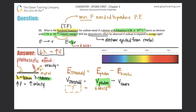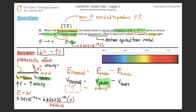E = hv, where h is Planck's constant: 6.626 times 10 to the negative 34th joules per second. The kinetic energy given is 7.74 times 10 to the negative 20th joules, so: 7.74 × 10⁻²⁰ = 6.626 × 10⁻³⁴ × v. Dividing both sides by Planck's constant gives the frequency of the kinetic energy: 1.17 times 10 to the 14th cycles per second.